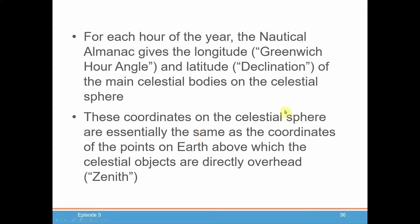Today's episode is the principles of celestial navigation. For every hour of the year, the Nautical Almanac will give you the longitude and latitude of your main celestial bodies you'll be concerned with in celestial navigation. That would be the sun, the moon, Venus, Mars, Jupiter, Saturn, and the stars.